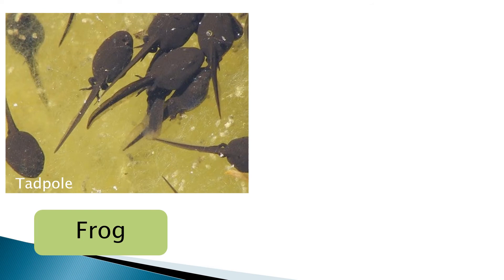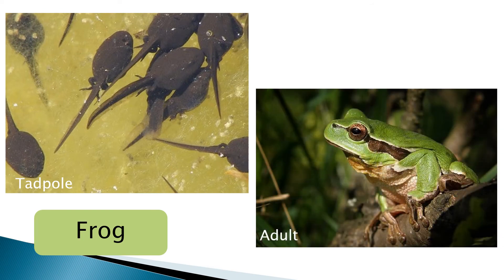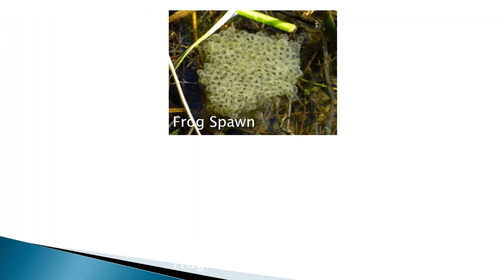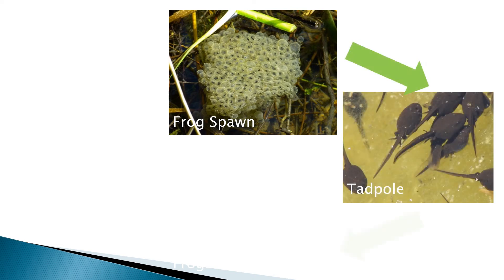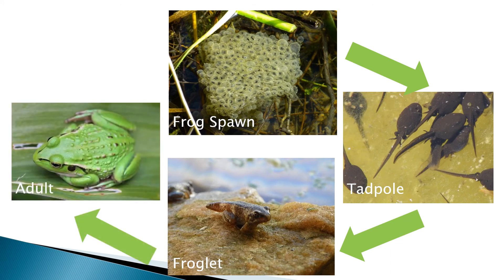Amphibians such as frogs also go through many changes as they grow. An adult frog will lay its eggs in water. From these jelly-like eggs tadpoles will hatch. They will grow legs and lungs and their tails will disappear. Later they will become adult frogs looking for a mate to lay their eggs once again, continuing the life cycle.